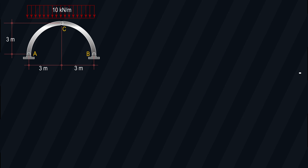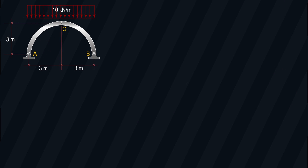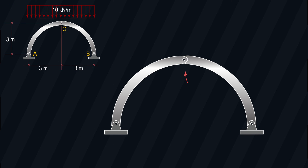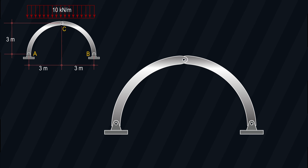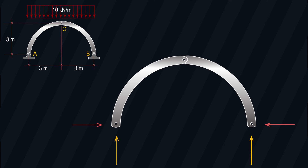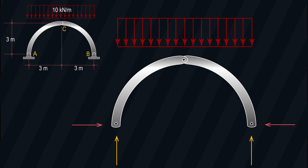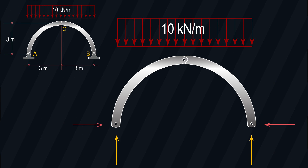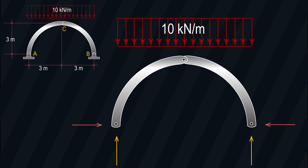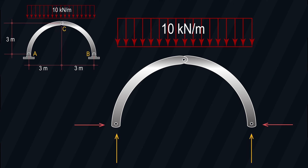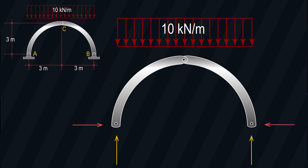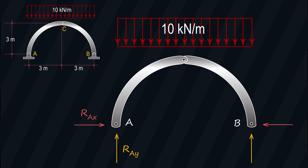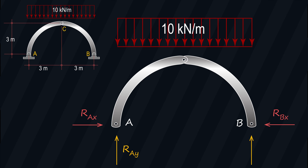You need to anticipate how certain supports would react. Since all supports are hinges, we'll only be dealing with reactive forces along the X and Y directions. Taking the whole structure, the free body diagram would look like this. All applied forces should be included, and reactive forces will be along the X and Y axes. At point A, we have RAX and RAY. At point B, we have RBX and RBY.